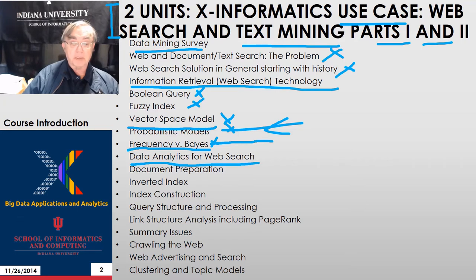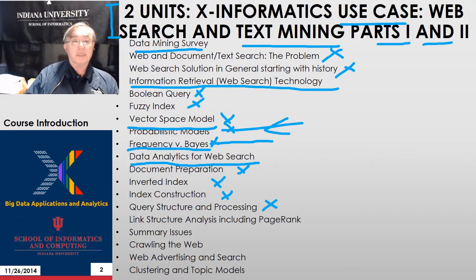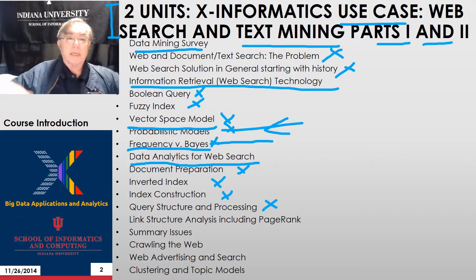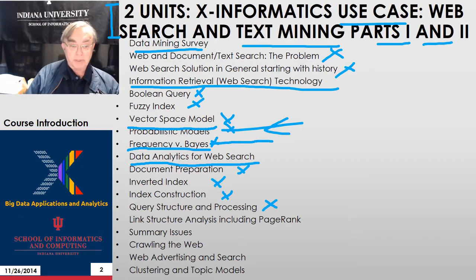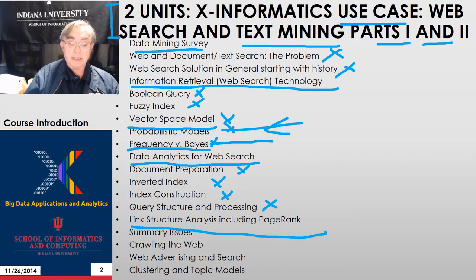We look at data analytics used in web search in some detail: document preparation, forming the inverted index, constructing the index, and query structure and processing. That's the core, very old information retrieval. A lot of the really important capabilities now come from the use of context — joining all the information together. When you type a search, the system knows who you are, where you live, what you do, what you last did, and uses that to optimize the response. One key technique is link structure analysis, which is ranking using the number of links to a page.